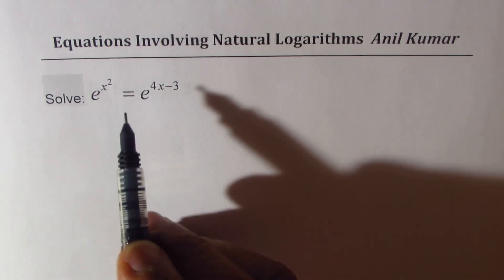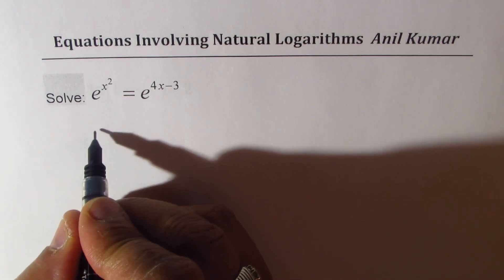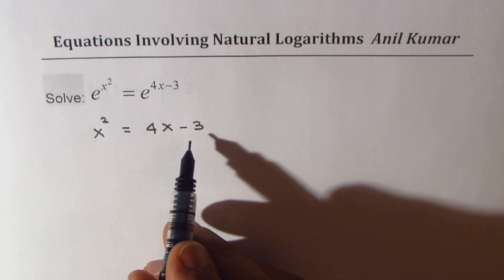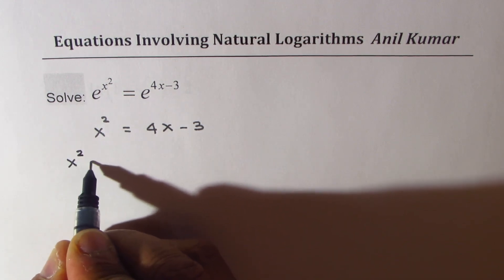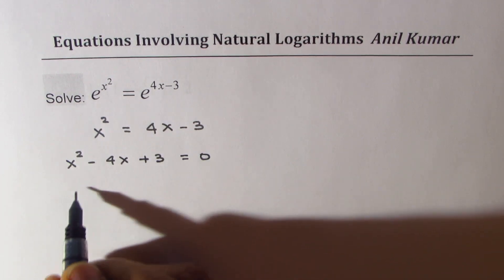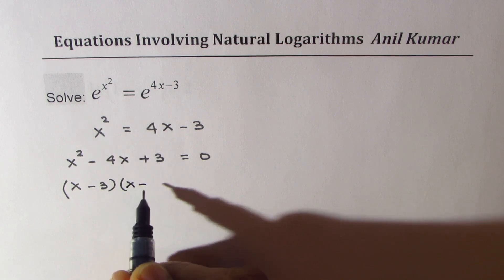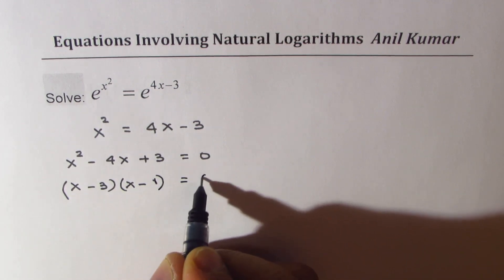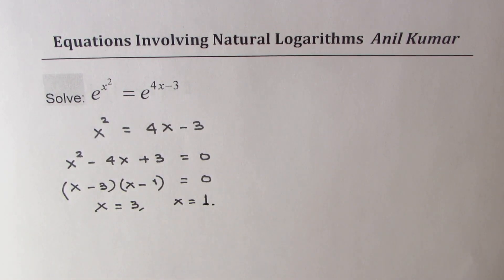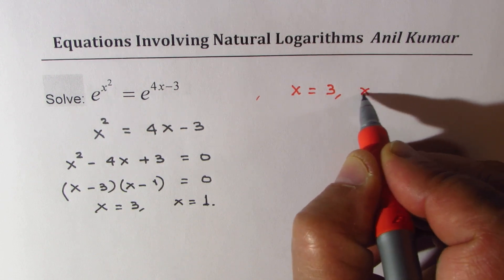For question B: e to the power of x squared equals e to the power of 4x minus 3. Since both bases are the same, we equate the exponents: x squared equals 4x minus 3. Rearranging gives the quadratic x squared minus 4x plus 3 equals 0. Factoring gives (x−3)(x−1) equals 0, so x equals 3 and x equals 1. We have two solutions.